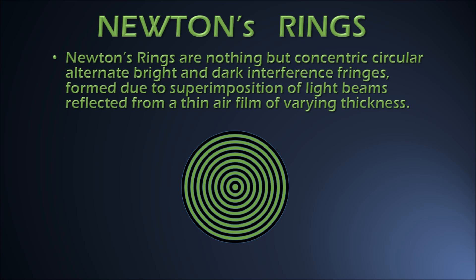In this video I am going to share some very important points about Newton's rings — what they are, how they are formed, and what their use is. Newton's rings are concentric circular alternate bright and dark interference fringes which are formed due to superimposition of light waves reflected from a thin air film of varying thickness.